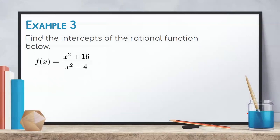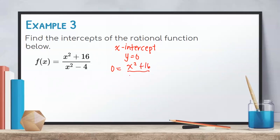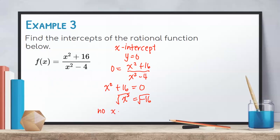Lastly, find the intercepts of the rational function: f(x) = (x² + 16) / (x² - 4). To solve for the x-intercepts, set y = 0, giving x² + 16 = 0, so x² = -16. Getting the square root of both sides, we need the square root of -16. Since a negative number does not have any real square root, this function does not have an x-intercept.